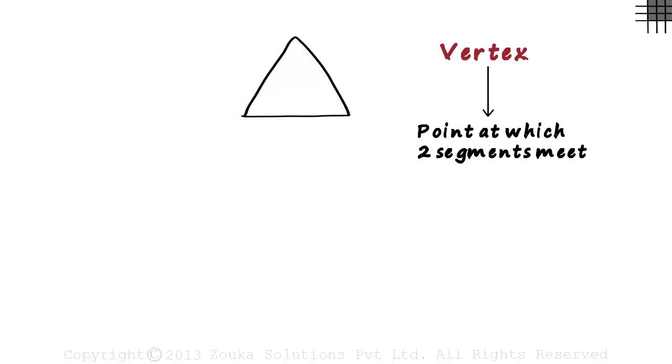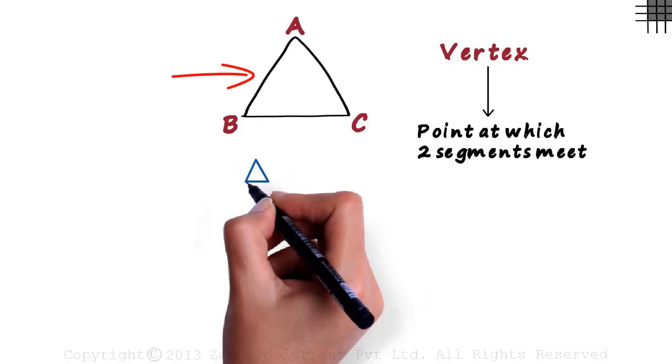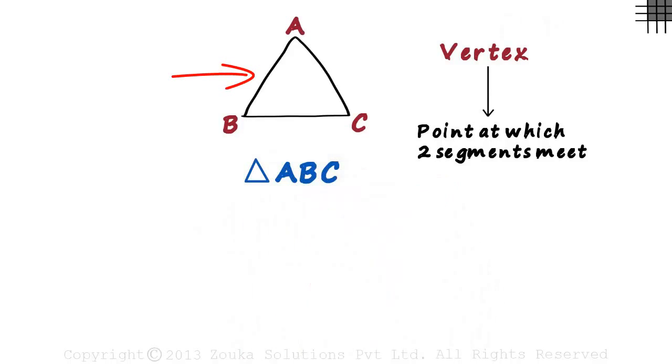And to name the triangle, all we have to do is name the vertices. Let's name them A, B and C. This triangle will be called triangle ABC. Instead of writing the word triangle every time, we use the symbol of a triangle instead. Is the order important here? Can we call it triangle BAC or triangle CBA? Yes, we can but wherever possible we should try and follow the alphabetical order.